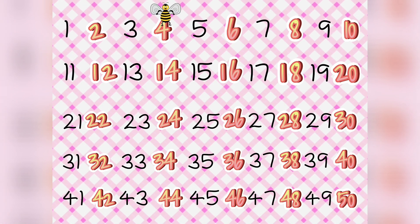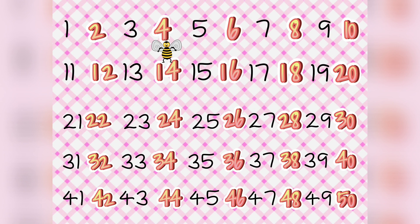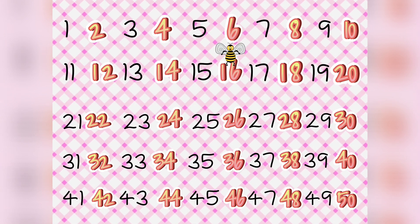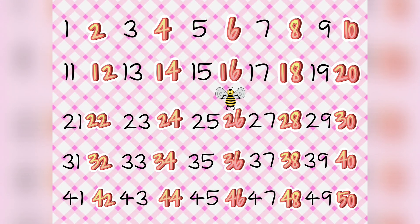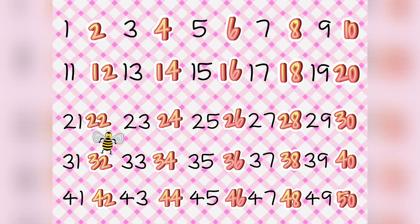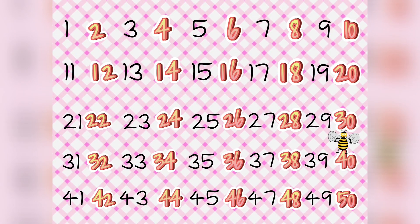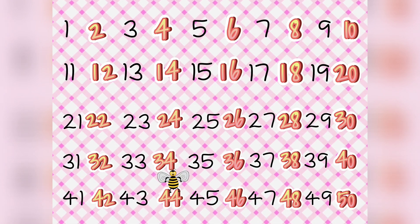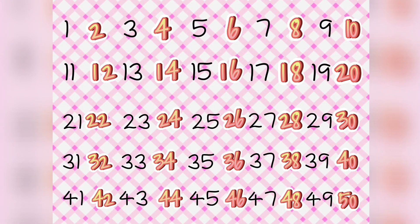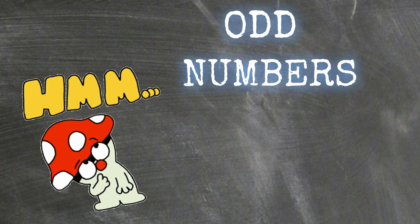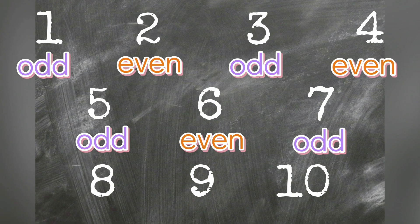2, 4, 6, 8, 10, 12, 14, 16, 18, 20, 22, 24, 26, 28, 30, 32, 34, 36, 38, 40, 42, 44, 46, 48, 50. Watch more videos regarding odd and even numbers in my YouTube channel.